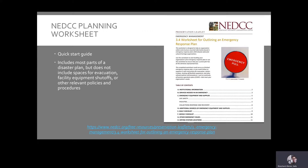The Northeast Document Conservation Center also created a planning worksheet designed to help an institution collect information to build a disaster plan. It contains many but not all of the disaster plan elements discussed in this video. The worksheet does not have places to include information about evacuation guidelines, locations of facility system shutoffs, or other relevant policies and procedures. But it is helpful for collecting contact information, supply information, and information about salvage priorities. You might want to use this as a jumping-off point and augment it later with more procedures and instructions for what's not included in the worksheet.